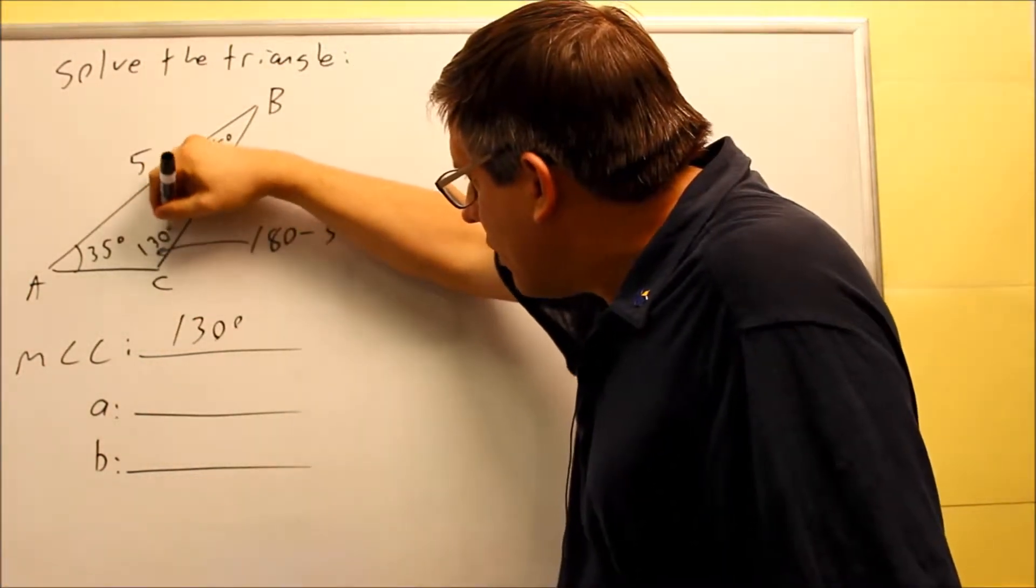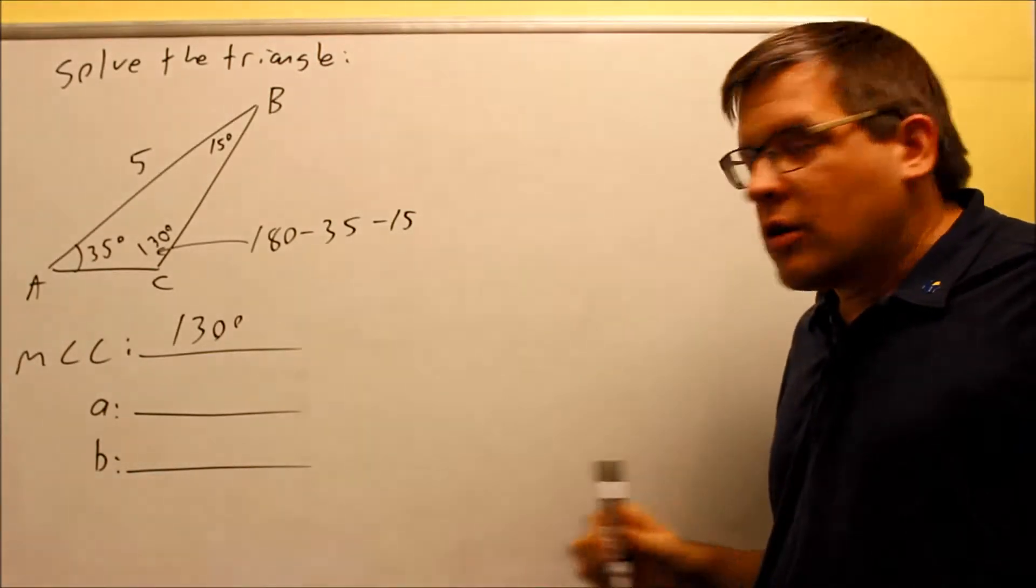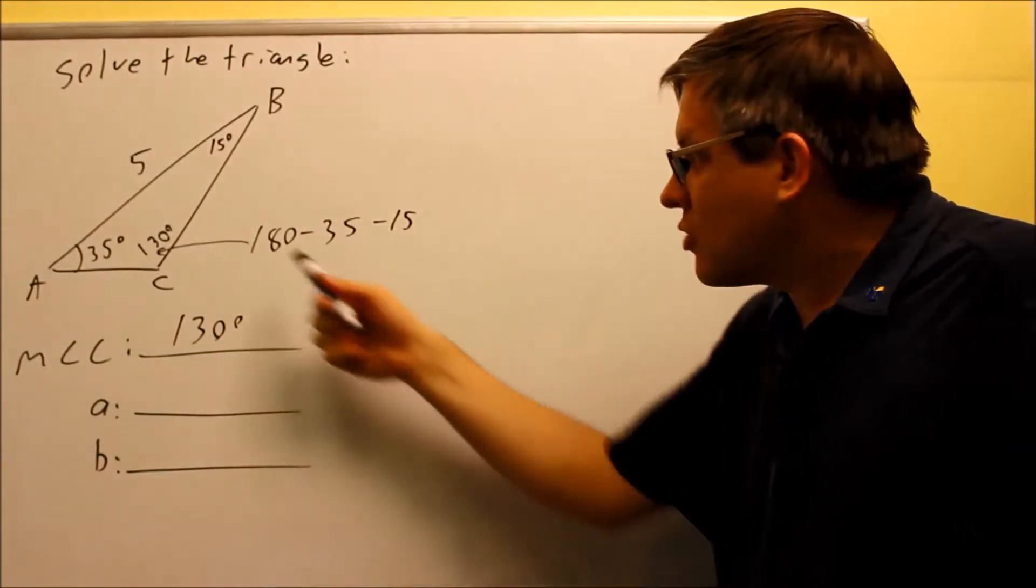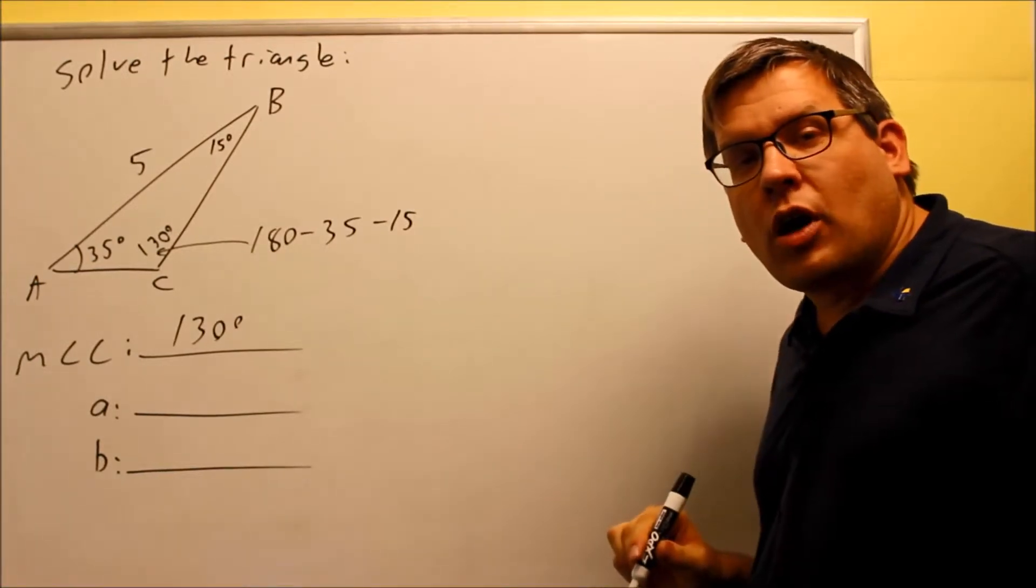So 130 would be the angle that's right there. We just subtract them and the sum of all the angles in the triangle add up to 180. That's why we're subtracting from 180 here.